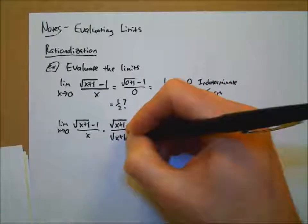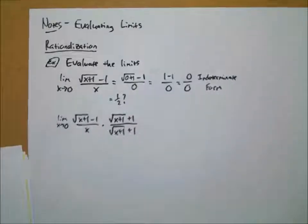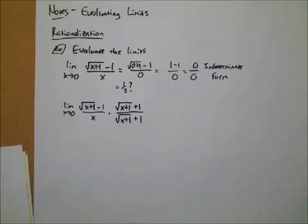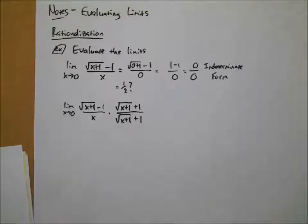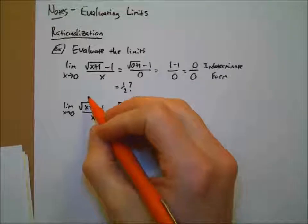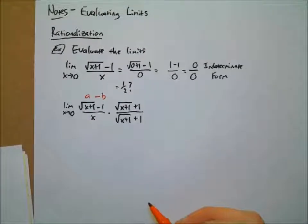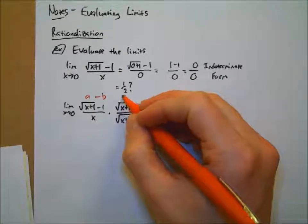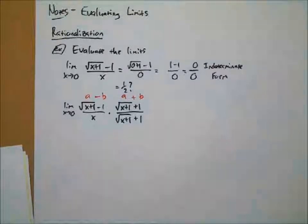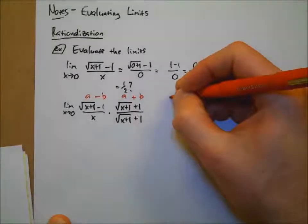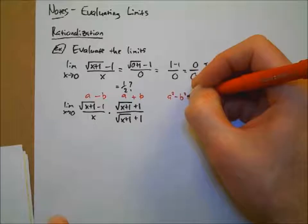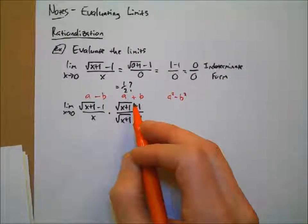We're going to multiply by the conjugate — if you remember that word from algebra two. We've got the square root of x plus one — call that a — and then minus one, call that b. Then I multiply by a plus b. And we know that a minus b times a plus b simplifies to a squared minus b squared — a difference of squares. That's how you factor the difference of squares into a minus b times a plus b.